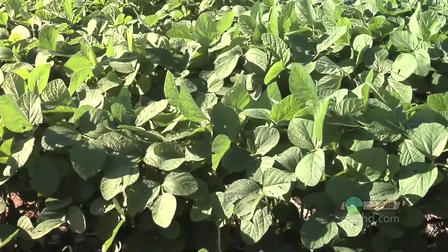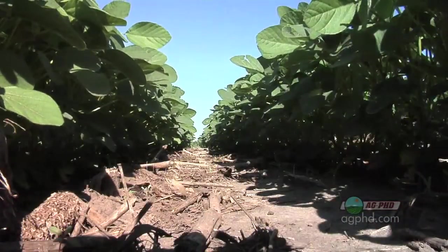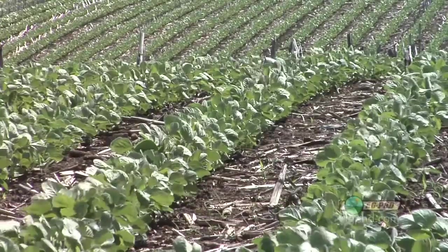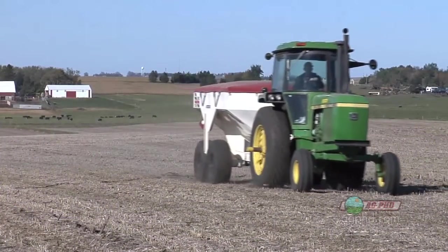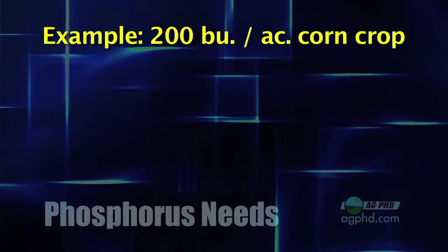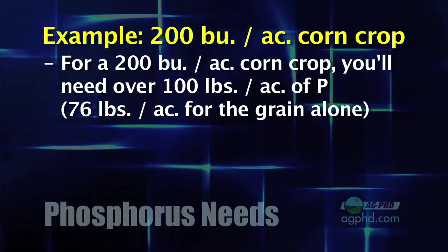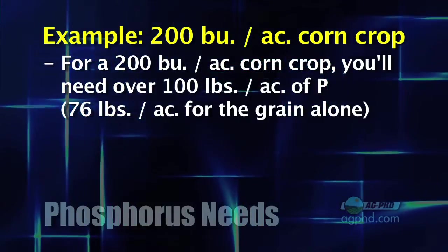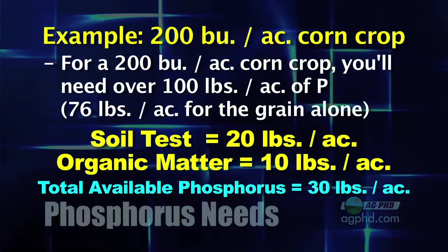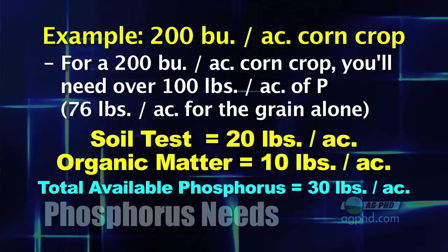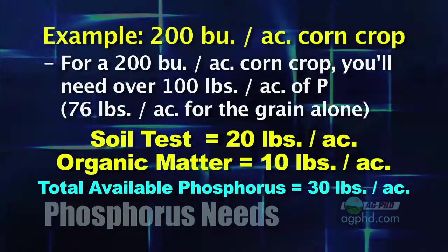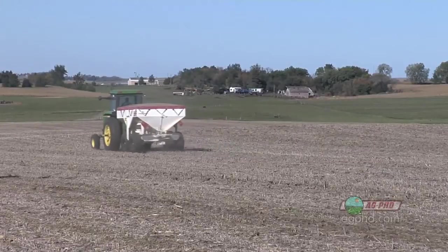Then you need to look at how many pounds of phosphorus your crop needs. Some will come from organic matter breaking down in your soil, and some left over from previous crops — but you may need to apply more depending on which crop you're raising. For example, a corn crop yielding 200 bushels will need approximately 76 pounds just for the grain, and over 100 pounds total. If your test reads 10 PPM — around 20 pounds — plus maybe 5-10 pounds from organic matter, you're at roughly 30 pounds total, well short of the 100-plus pounds needed.